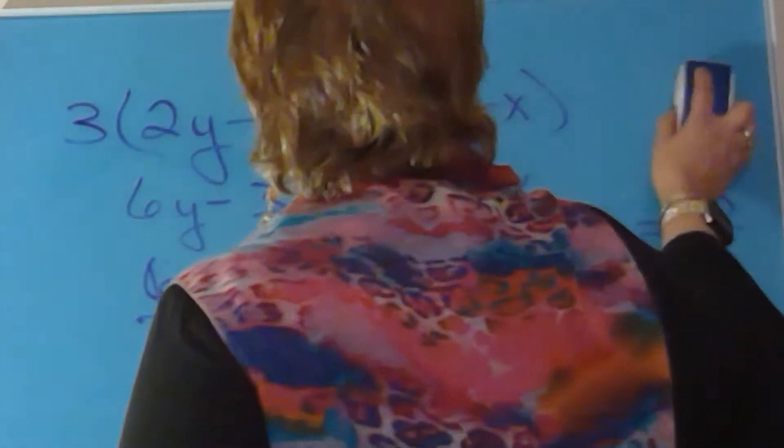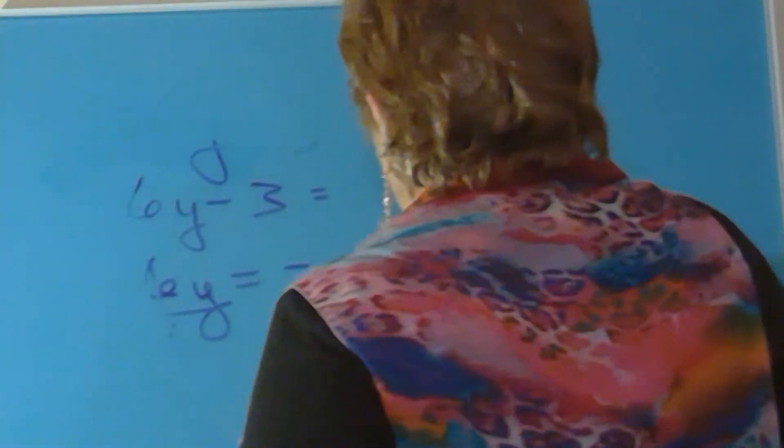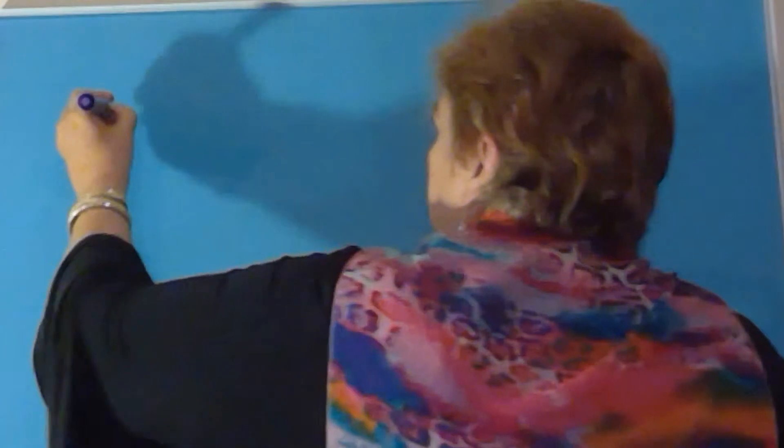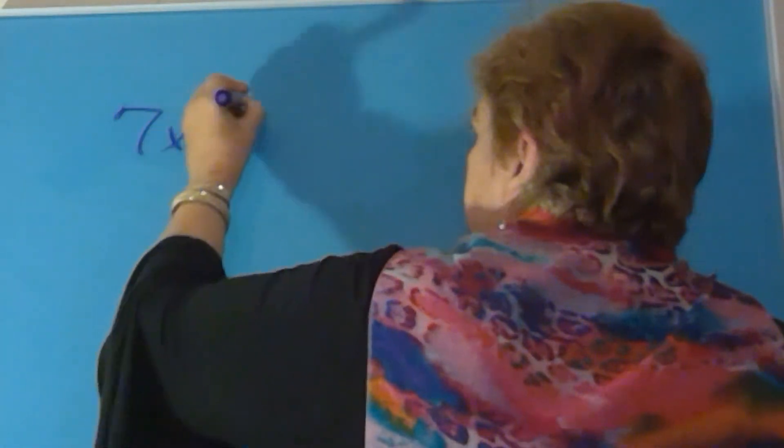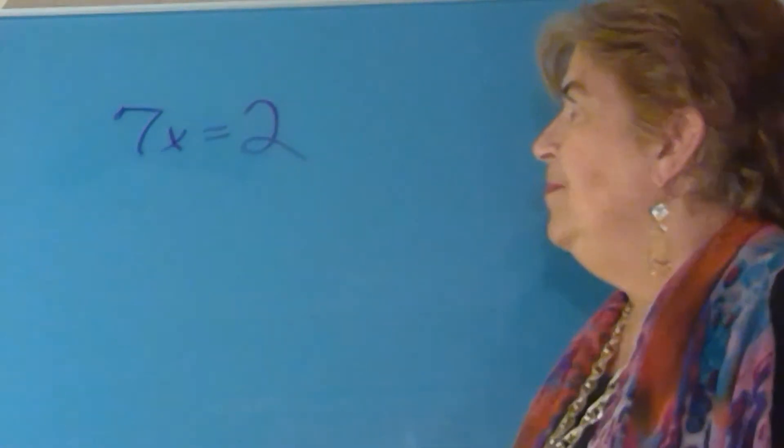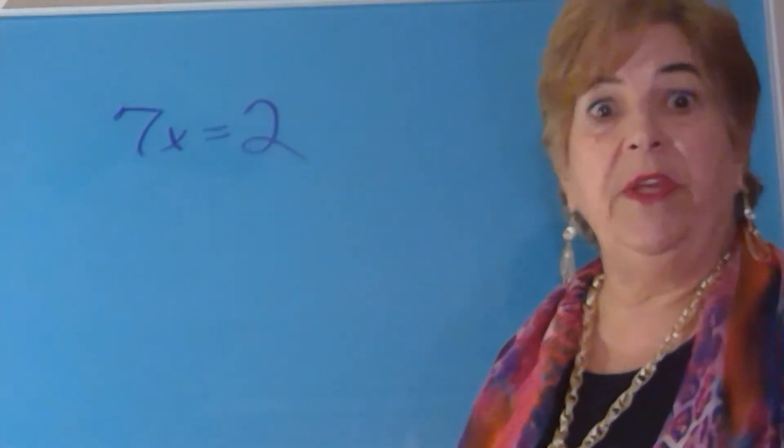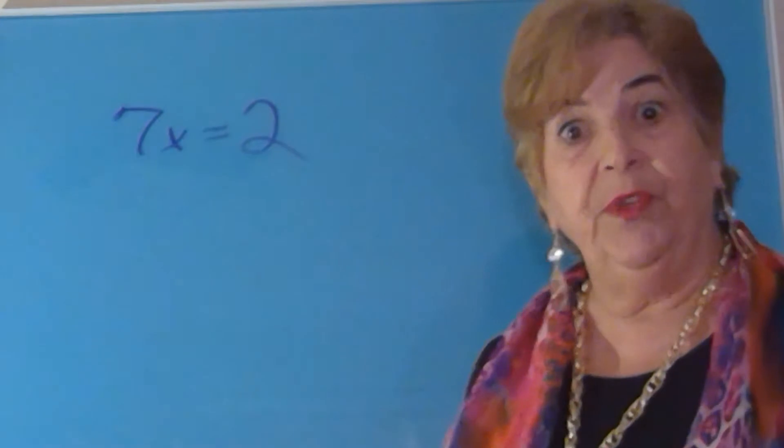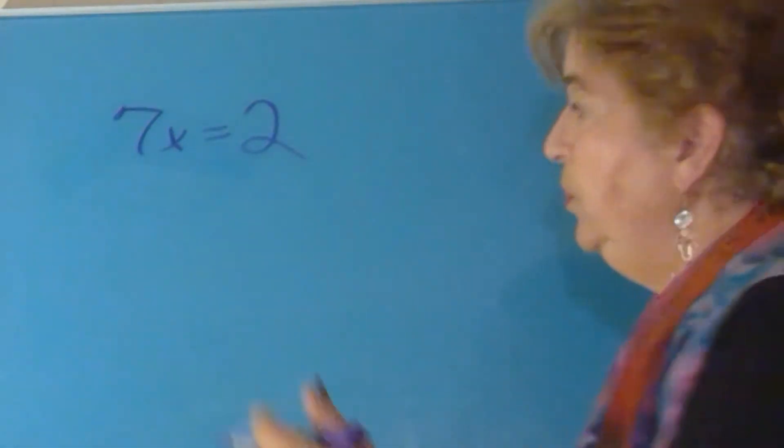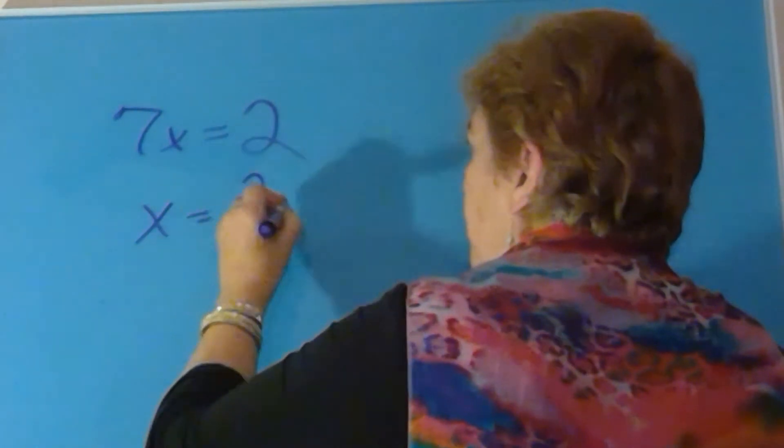In the next problem, you were also given an equation and asked to find the slope. So the equation was seven x equals two. If you look at this, there's no y in the equation. So there's no way you can get y by itself because there is no y. If you wanted to, you could divide by the seven, and that would give you x equals two over seven.